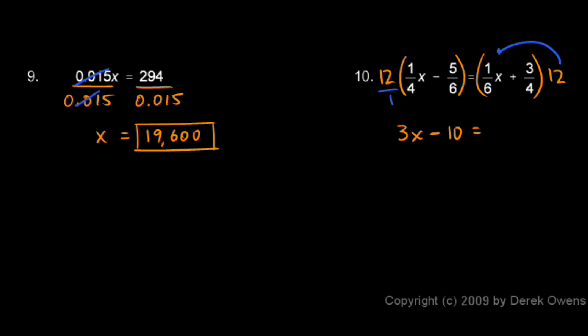We do 12 times 1/6 x. Remember, this 12 is 12 over 1. So the 12 on the top and the 6 on the bottom, in this case, that reduces to a 2. And we have an x. Multiplying by that 1 doesn't change anything. So on the right side there, I have a 2x.